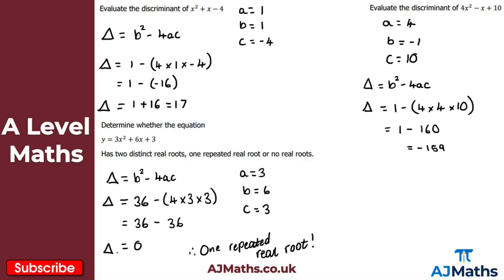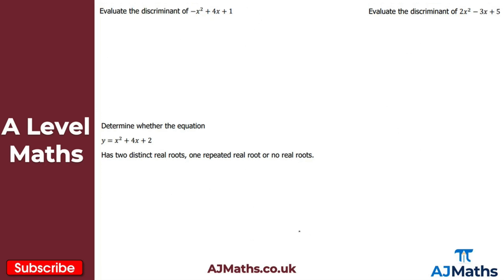Let's double-check: 4 times 3 is 12, times 3 is 36 — perfect. That confirms one repeated real root. Now it's your turn — pause the video, have a go at the practice questions, and then we'll look at the answers together.